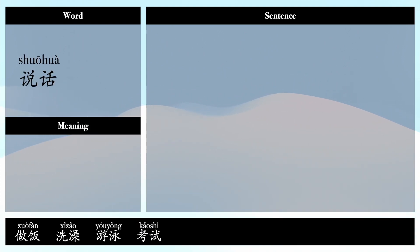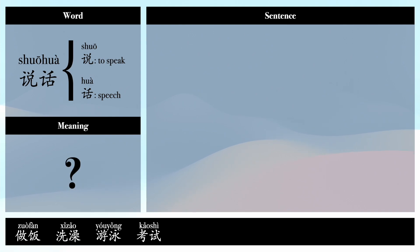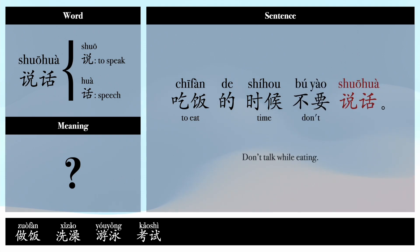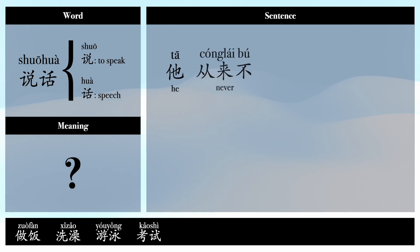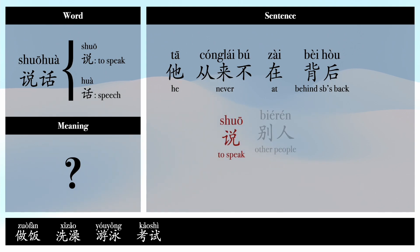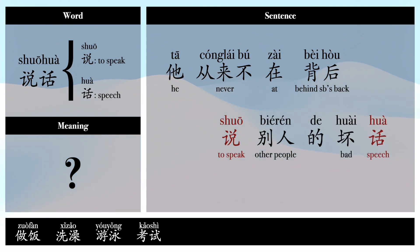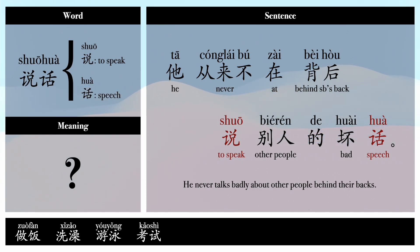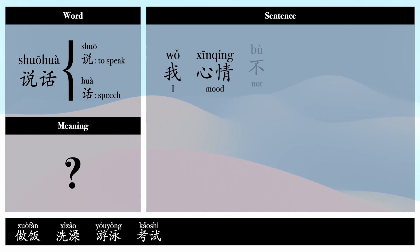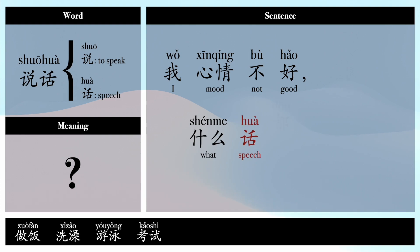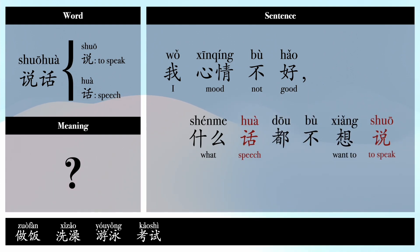说话 — 说: to speak, 话: speech. Example sentences: 吃饭的时候不要说话。(Don't talk while eating.) 他从来不在背后说别人的坏话。(He never speaks badly of others behind their backs.) 我心情不好，什么话都不想说。(I'm in a bad mood; I don't want to say anything.)